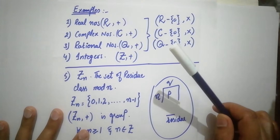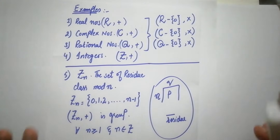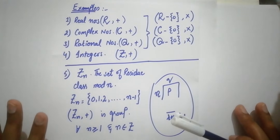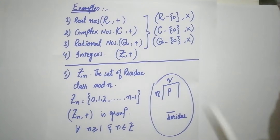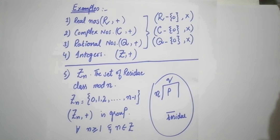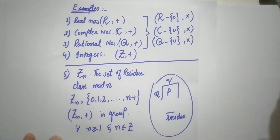Why is zero ignored? Because if there is a multiplication under any set and zero is present, then the inverse law fails. Because the multiplicative inverse of zero is infinity, and infinity is not in the set. So the inverse law fails and the set is not under the multiplication group. Therefore, if zero is excluded from Reals, Rationals, and Complex numbers, then those sets are under the multiplication group.